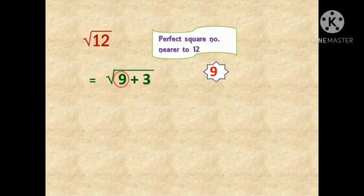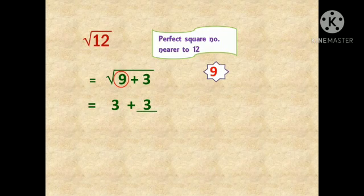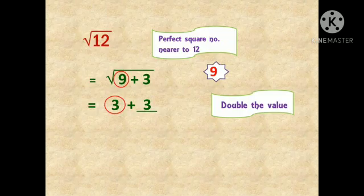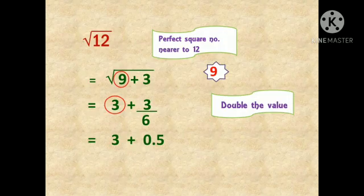In the next step, we take the square root of 9, which is 3. Then we write the remaining part as it is: plus 3 divided by the denominator, which should be double the value we found — that is double of 3, which is 6. These are the steps to remember; the remaining part is only calculation. 3 divided by 6 equals 1/2, which equals 0.5. So 3 plus 0.5 gives us 3.5.